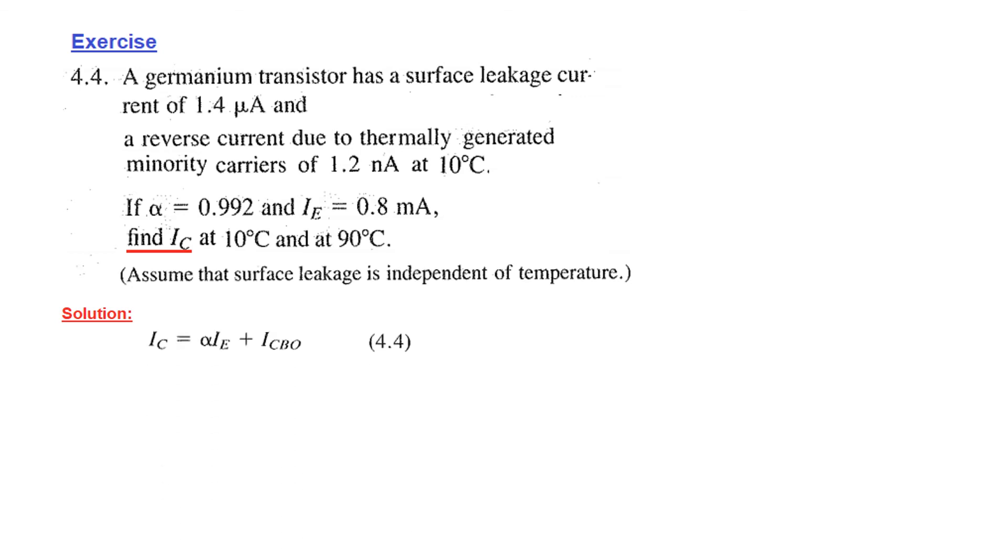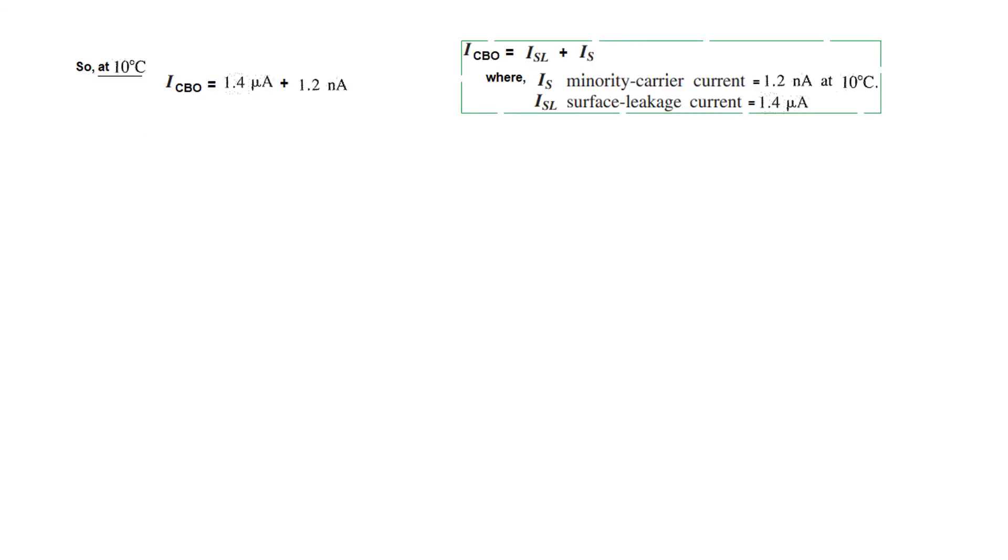Let's proceed. First, this is the formula for collector current: alpha IE plus ICBO. We also learned that ICBO is basically surface current plus the saturation current, or minority current. So IS is the minority carrier current and ISL is the surface leakage current. From the question, minority carrier current is 1.2 nanoampere at 10°C. The surface current is given to be 1.4 microampere. It also says assume that the surface leakage current is independent of temperature, so this does not change with temperature, but IS changes with temperature.